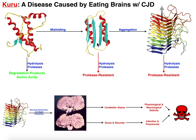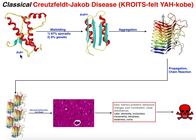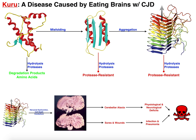Before we go into how Kuru was transmitted, let's do a brief review of prion proteins. This is the non-infectious form of the prion protein, typically designated PrPC — prion protein, where C designates the non-infectious form. If you were to consume this from the diet, say from a cow or a person, this form of the protein is susceptible to hydrolysis by proteolytic enzymes in the stomach and the small intestine.